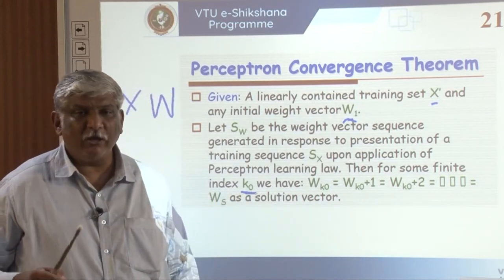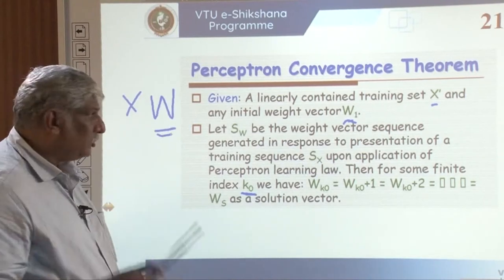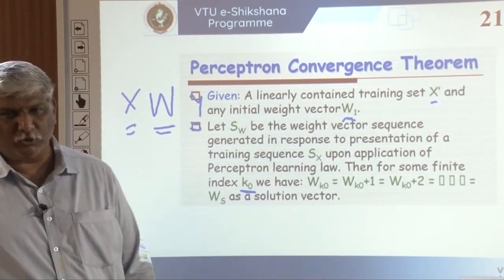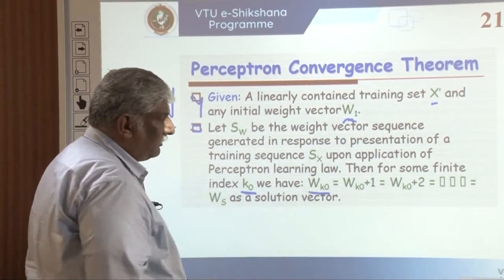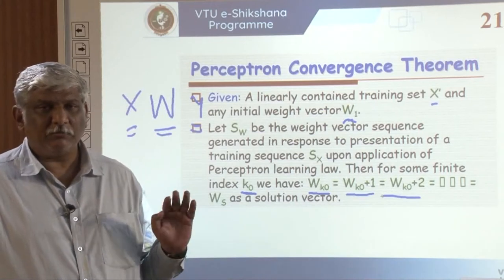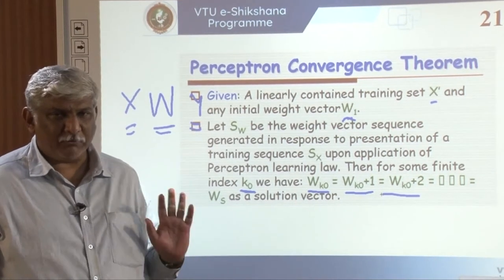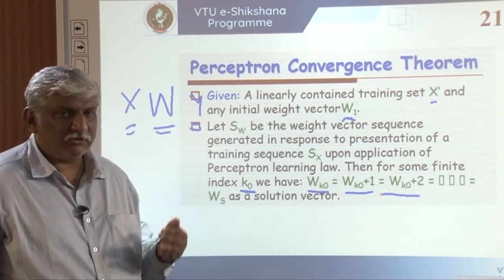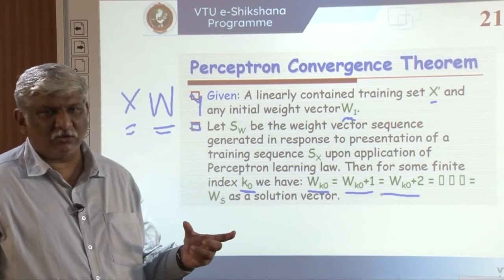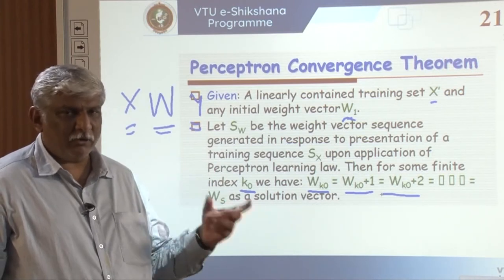I should be able to get some value k which satisfies a particular condition. Some value of w should exist such that for all values of x, I will be getting all the desired values of y. In this case, w(k0) equals w(k0+1), w(k0+2), and all belong to ws as a solution vector. The Perceptron Convergence Theorem simply states that learning should happen within some bounded finite number of iterations — it should not be infinite learning.